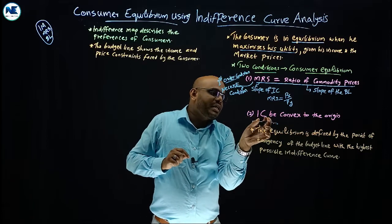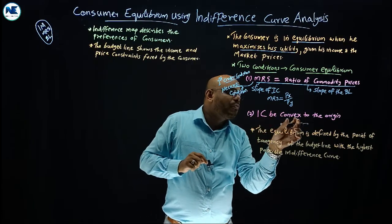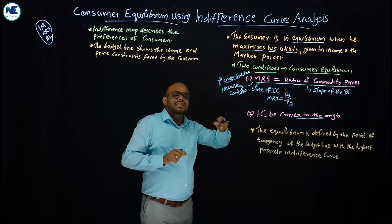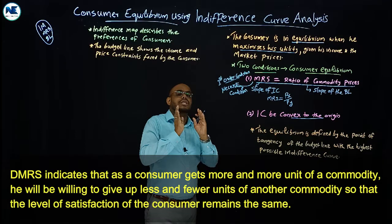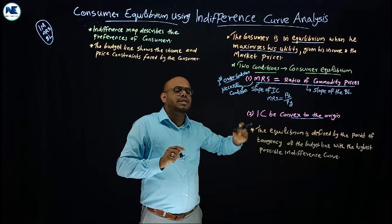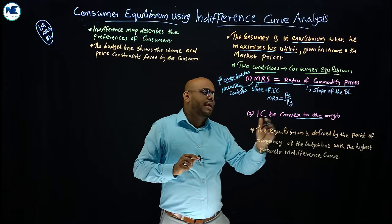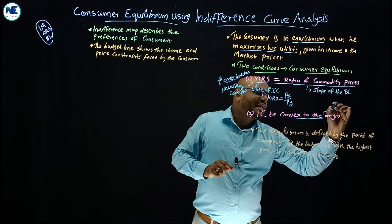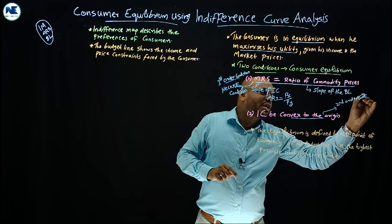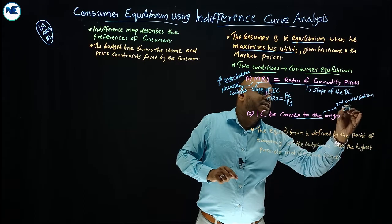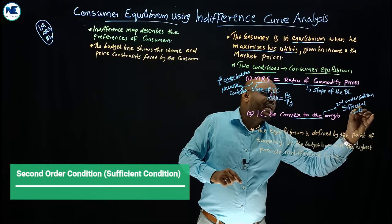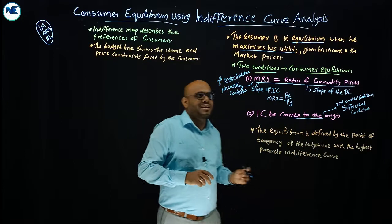The second order condition is that the indifference curve would be convex to the origin. This convexity represents the diminishing marginal rate of substitution, meaning the slope of the indifference curve is diminishing. This is the sufficient condition for consumer equilibrium.